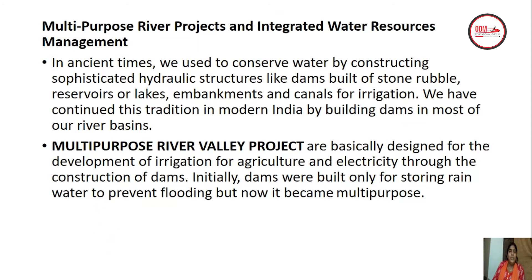In modern India, we have continued the ancient tradition of water conservation by building dams in most of our river basins. Multi-purpose river valley projects are basically designed for the development of irrigation for agriculture and electricity generation through the construction of dams.